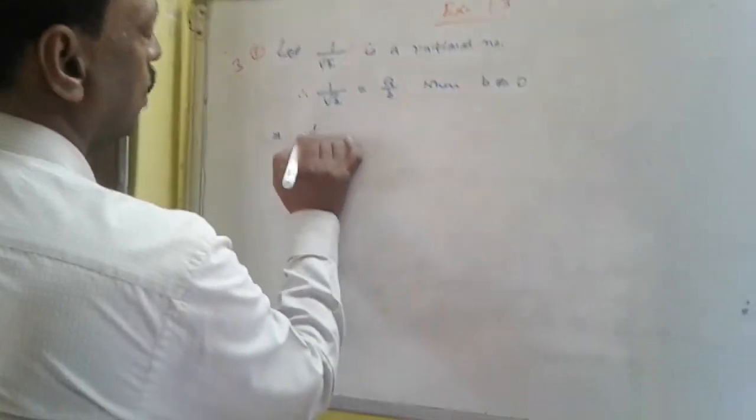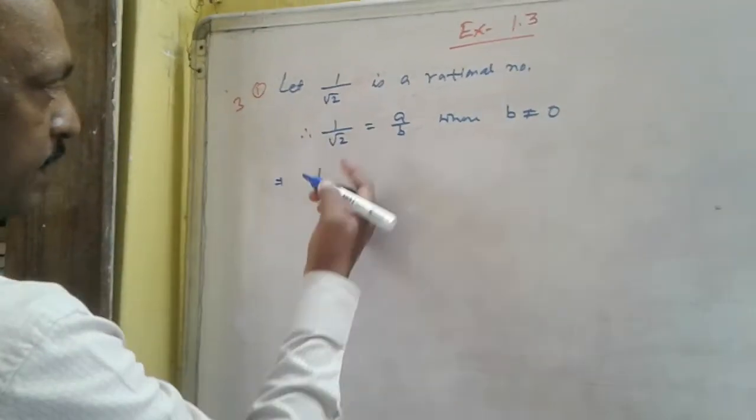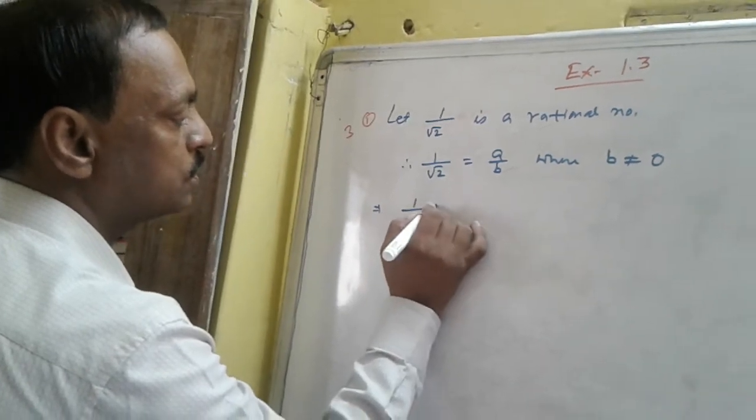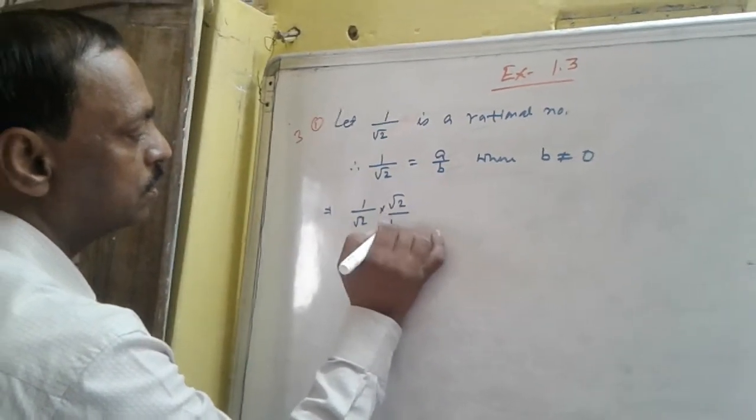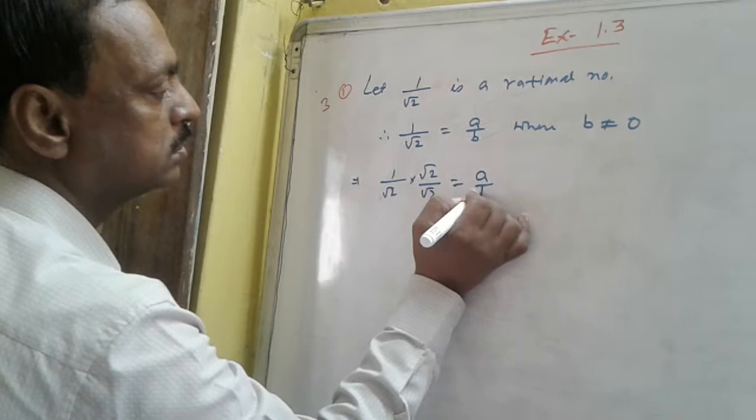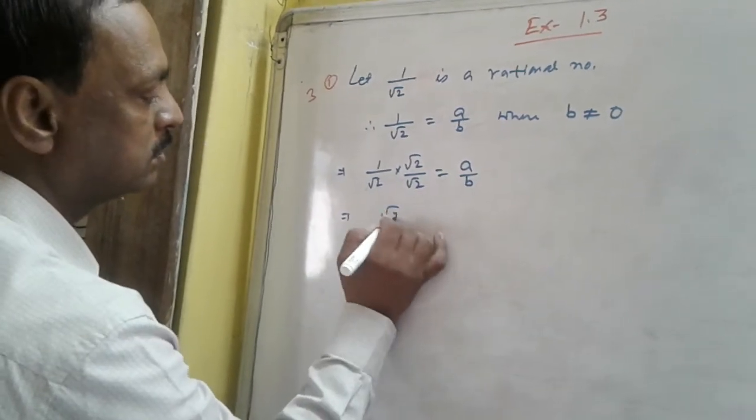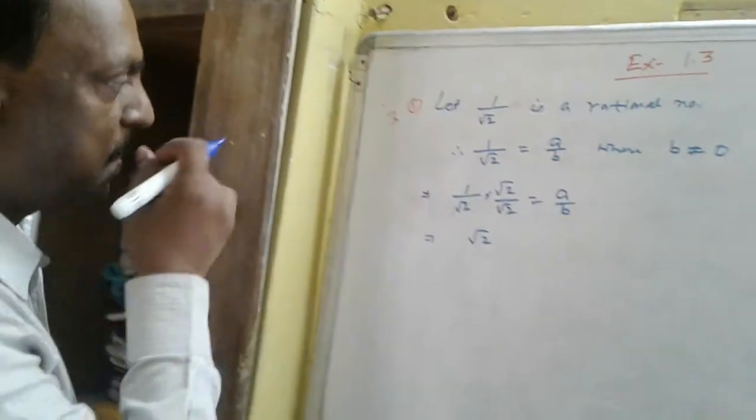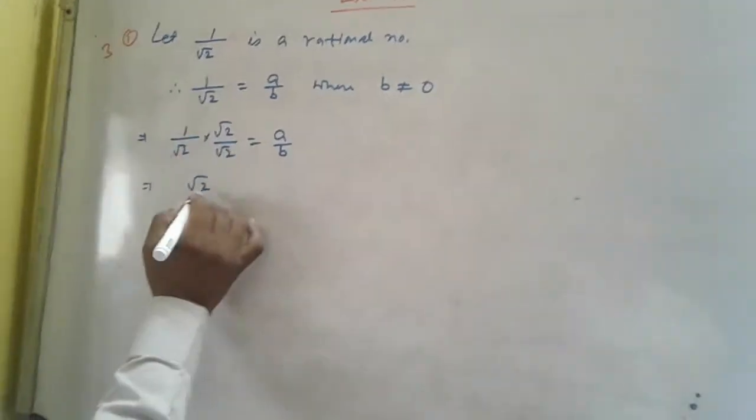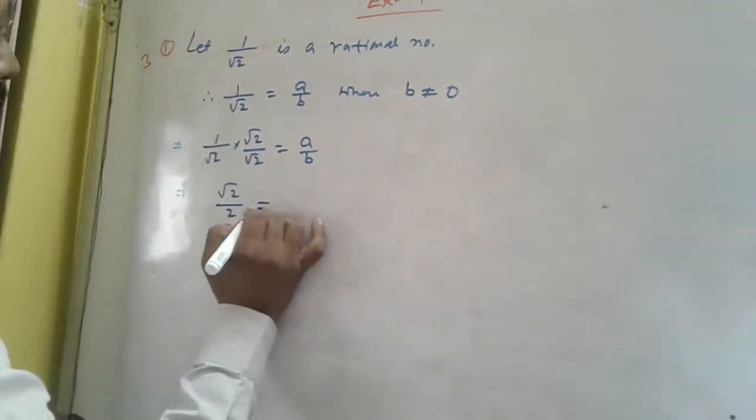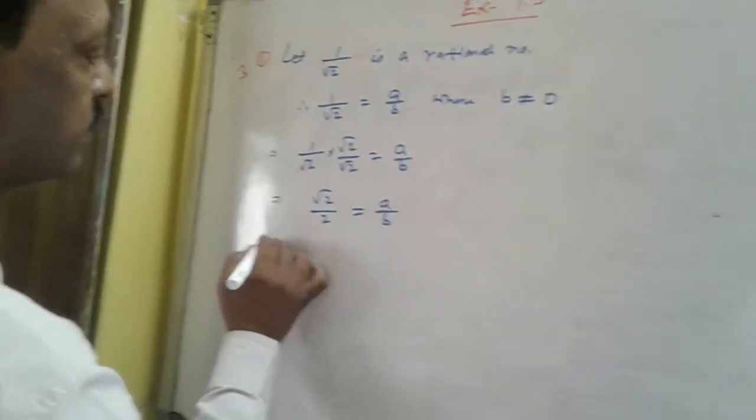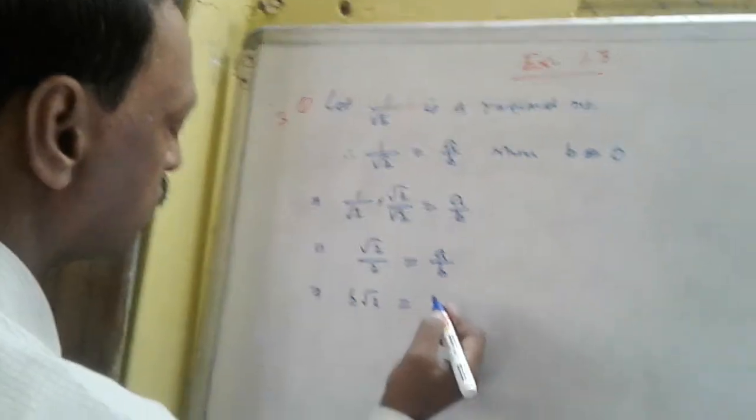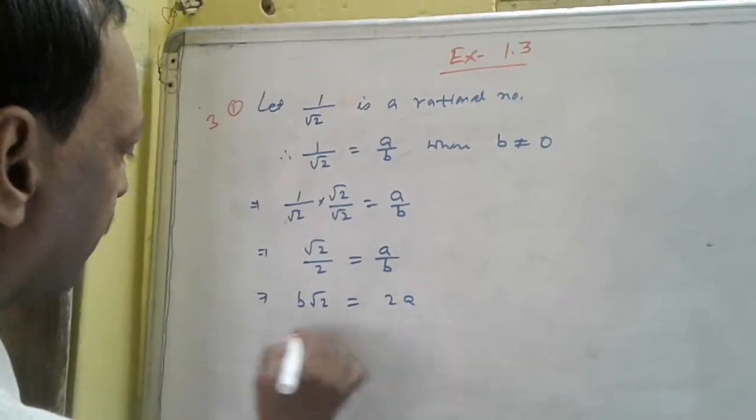Now, cross multiply it first, rationalize it. 1 by root 2 into root 2 into root 2. 2 by root 2 is equal to a by b. So, b root 2 is equal to 2a.